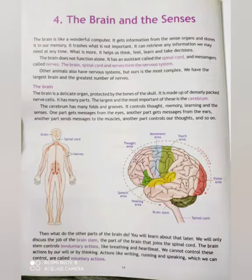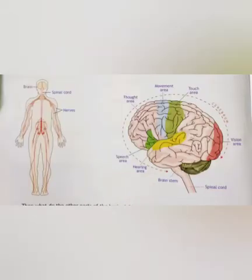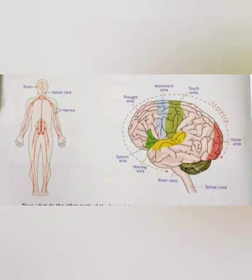Shall we start with the brain now? Most of you would have seen a computer. Our brain also works like a computer because it gets information from the sense organs — eyes, ears, nose, tongue and skin. It gets the information from the sense organs and stores it in our memory. It even deletes information which is not important and it can retrieve any information we may need at any time.